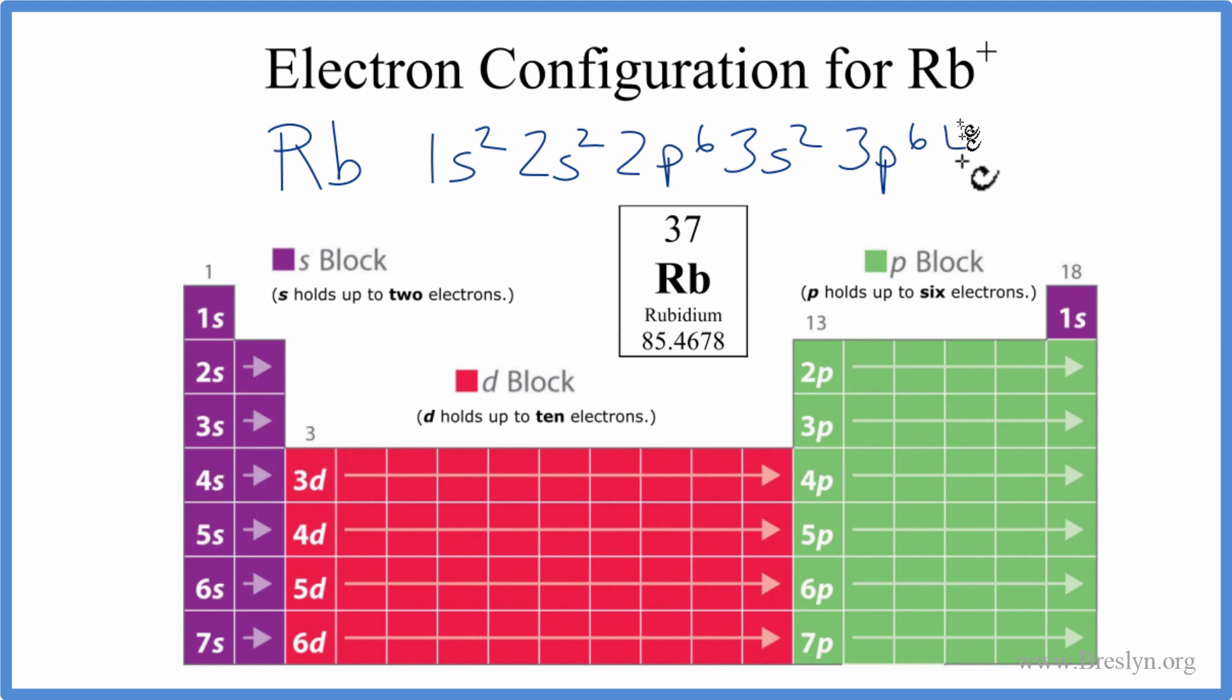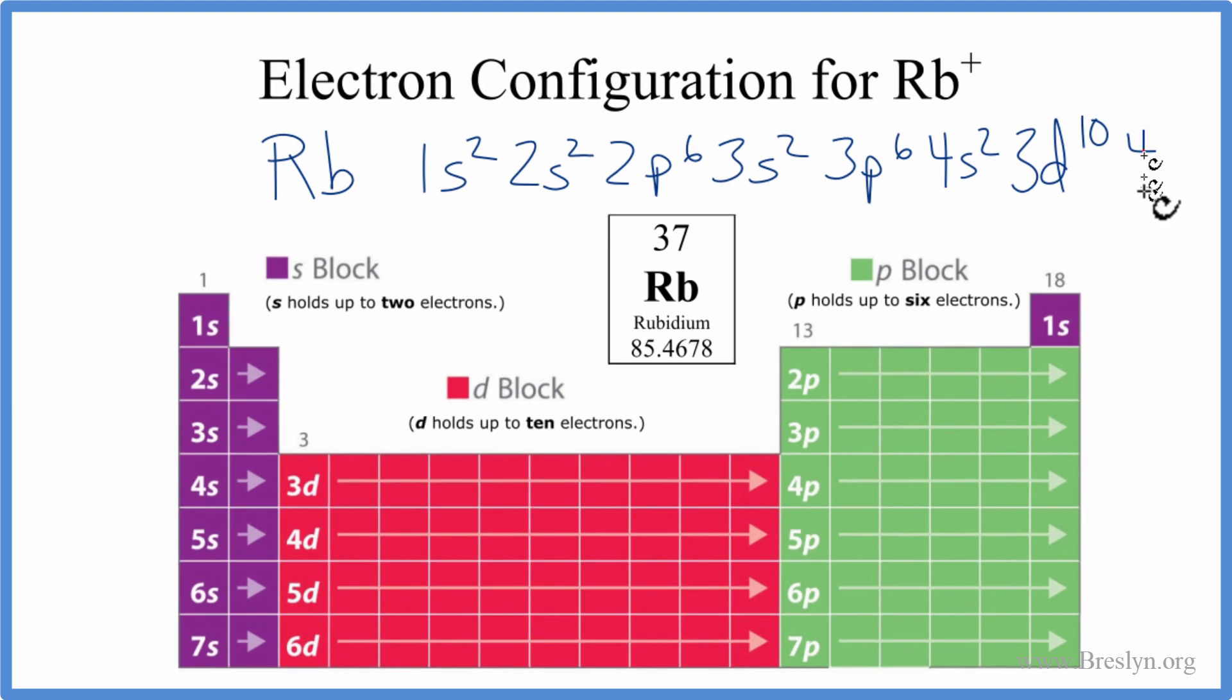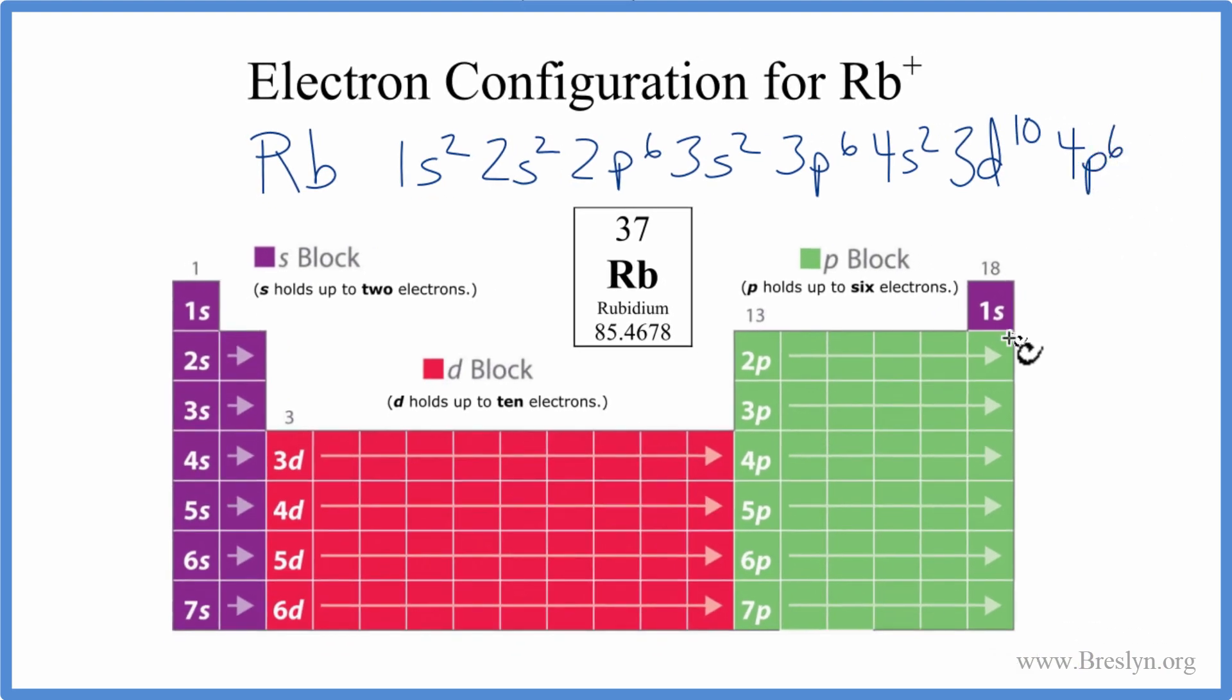3p, 4s2, 3d10. So far, we've used 30 electrons. From 3d, we go to 4p, we'll put 6 in there. That gives us 36, and we come over here to 5s. We said 5s can hold up to 2, but we only need one more, so we'll just put 1 there. And this is the electronic configuration for rubidium.